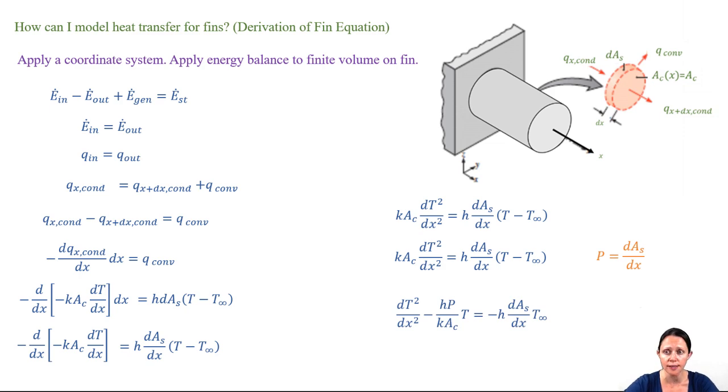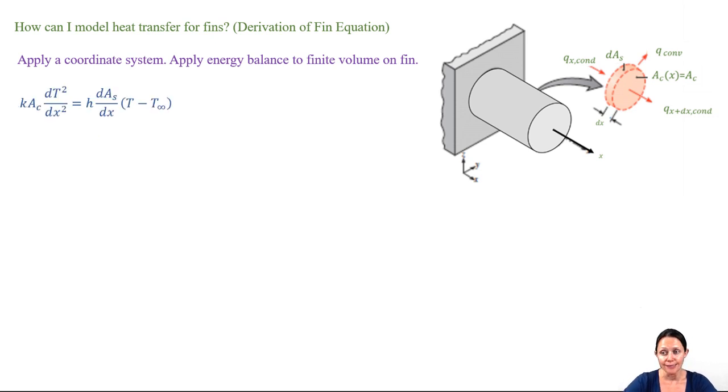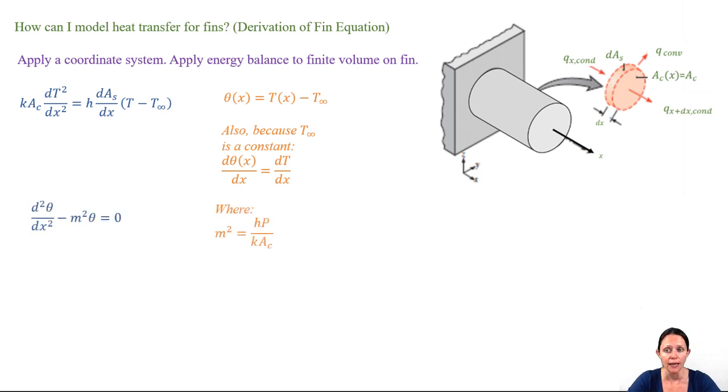Now if I rearrange things, I realize that I have a second order non-homogeneous differential equation, and I might not want to deal with that math. So often what you see is this substitution. Also, because t infinity is constant, the derivative with respect to x, the derivative of t with respect to x is equal to the derivative of theta with respect to x.